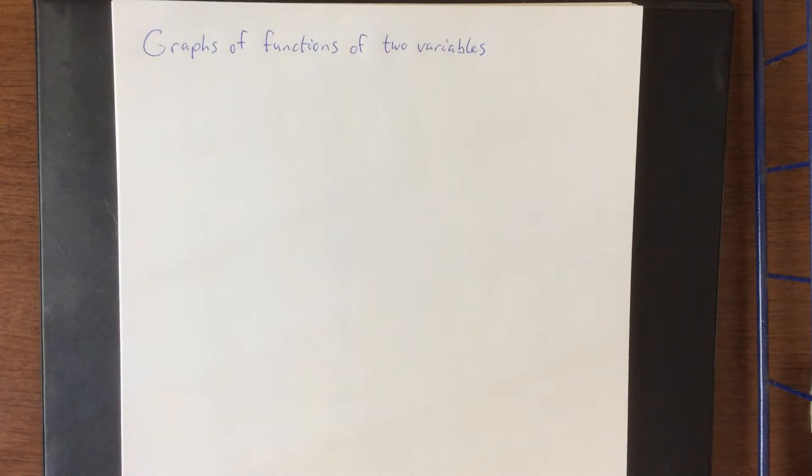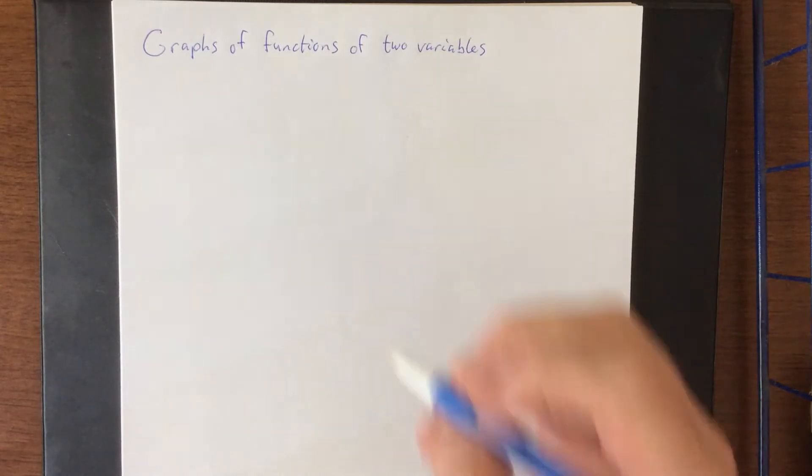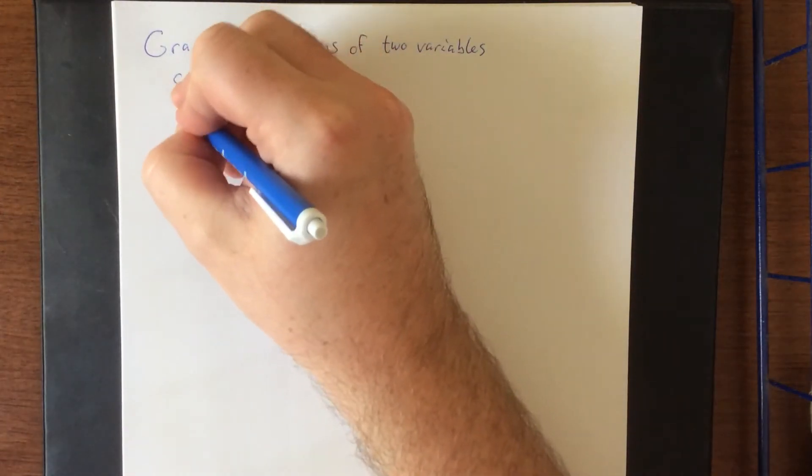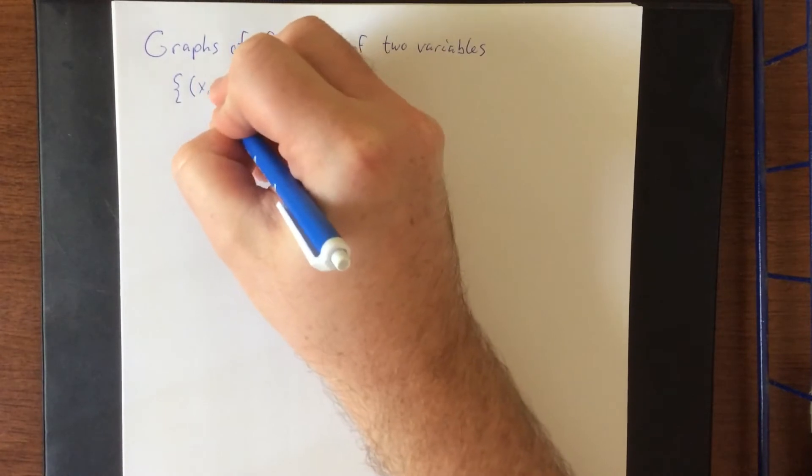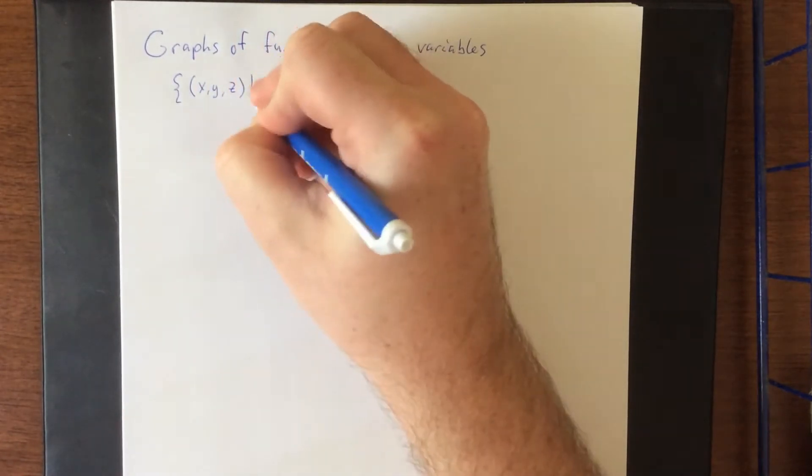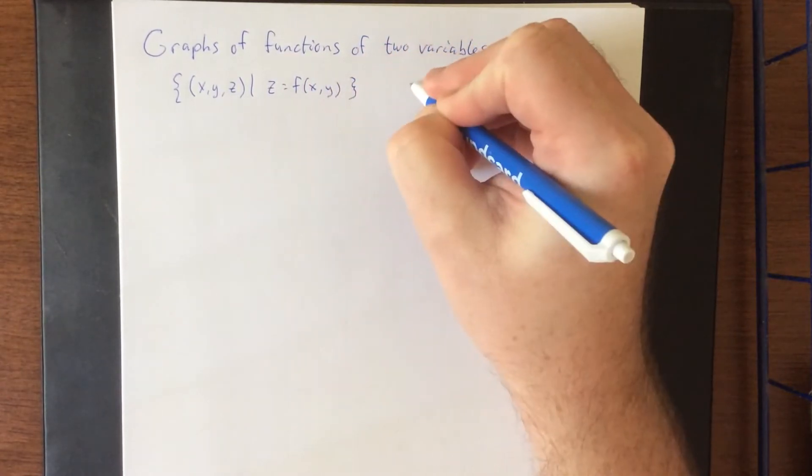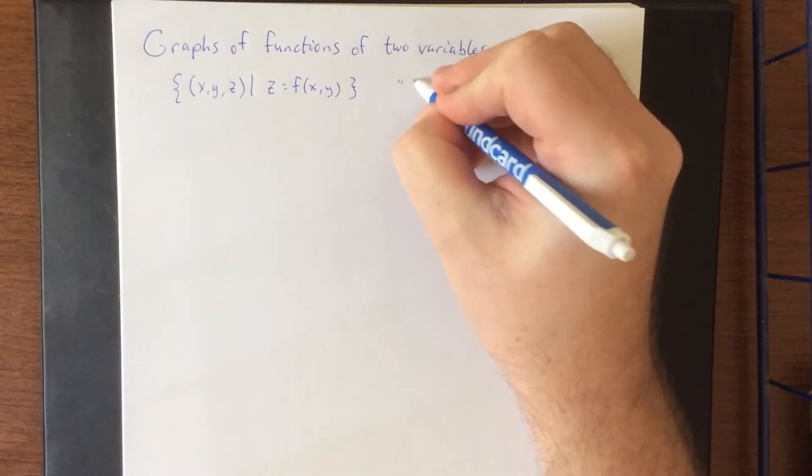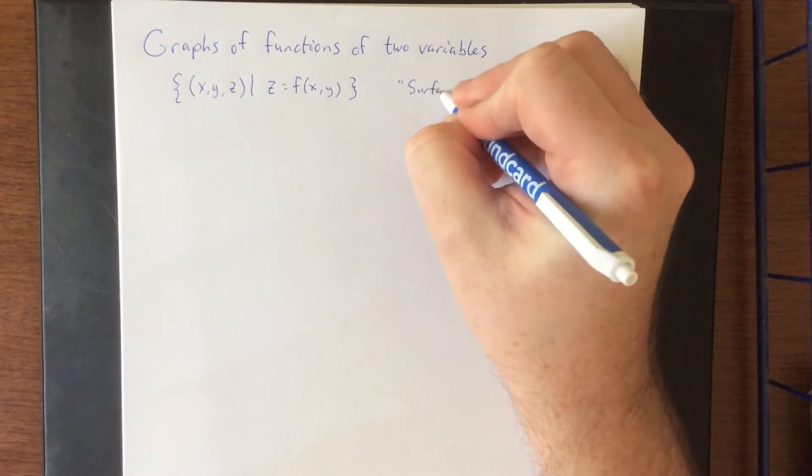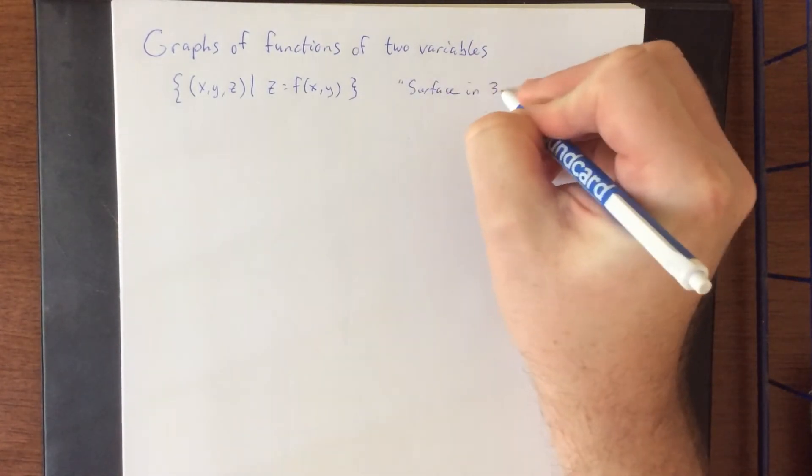Next up, let's talk about some graphs of functions of two variables. Now when we talk about graphs of functions of two variables, we are talking about all of the ordered triples such that z is equal to some function of x and y. So this does count as a surface in three dimensions.